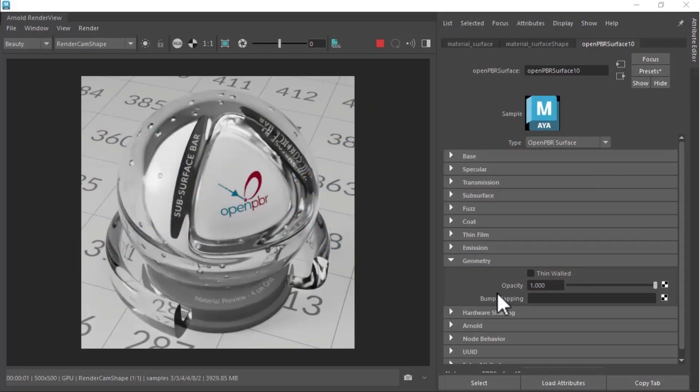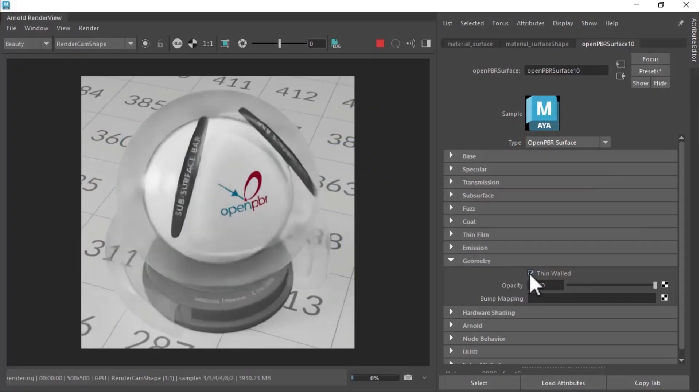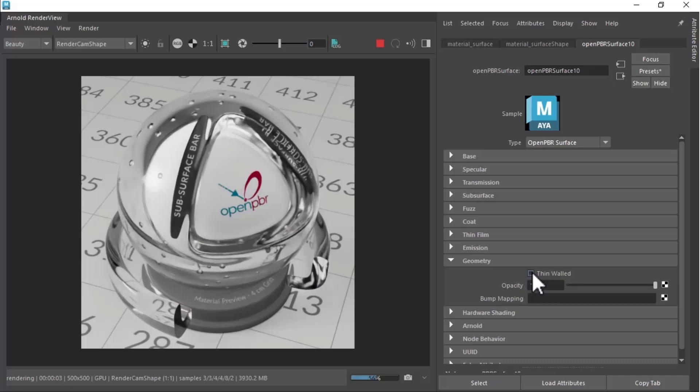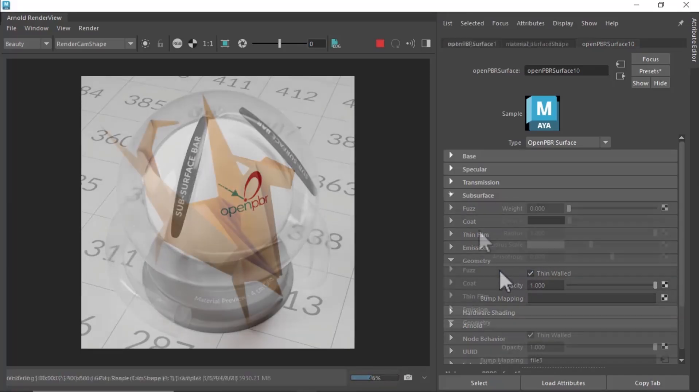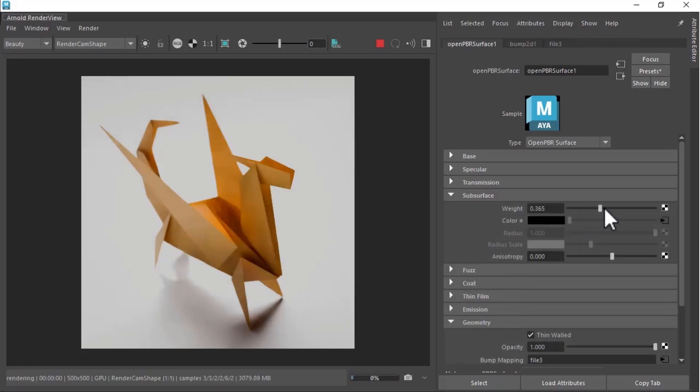Notice that the background doesn't get refracted, which is physically correct, but the thin wall still roughens the background. It can also be used in the subsurface mode to model diffuse transmission. For example, this can be used to model an origami paper dragon as a single-sided mesh. In this mode, the subsurface scattering and anisotropy controls the amount of light bleeding.